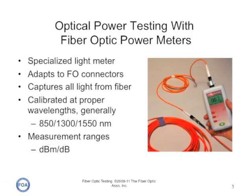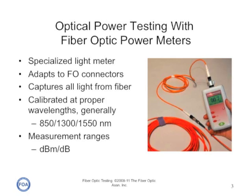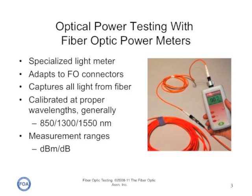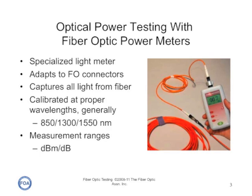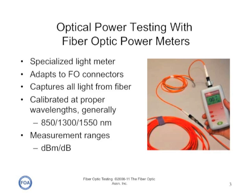To measure optical power, we use an instrument called a Fiber Optic Power Meter. It's basically a specialized light meter with adaptation for fiber optic connectors. It's designed to capture all the light coming out of the fiber, measure it, and calibrate the power at the typical wavelengths we use in fiber optics: 850, 1300, and 1550 nanometers.